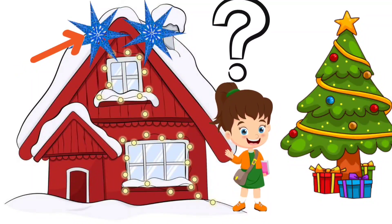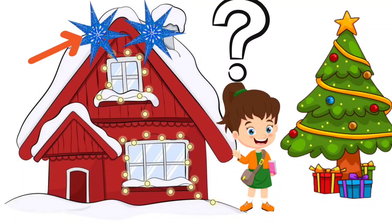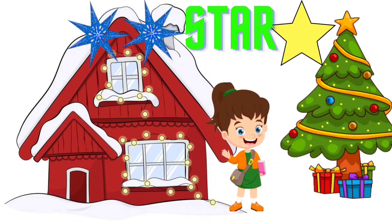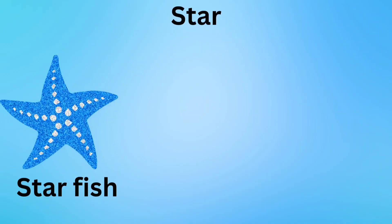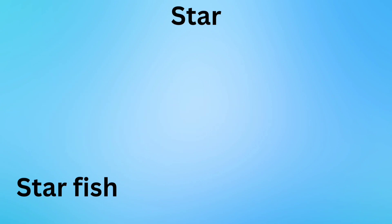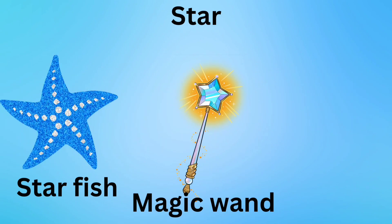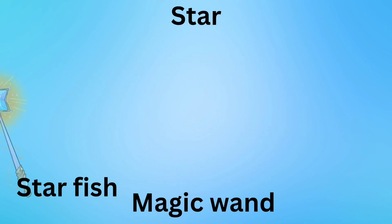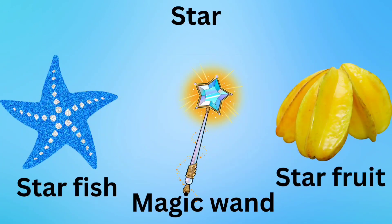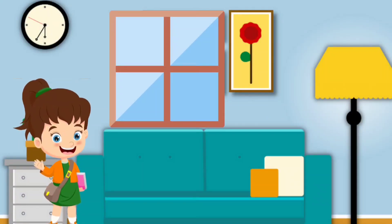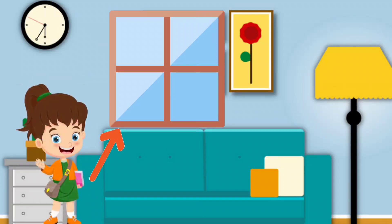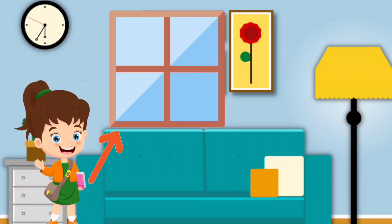Hi, we are at a Christmas celebration. Look, there is a star. What shape is it? Yes, it's a star shape. Some examples: starfish, magic wand, star fruit. These all are star shapes.